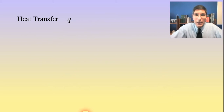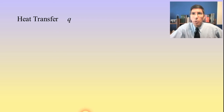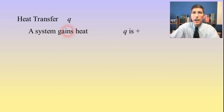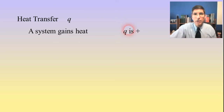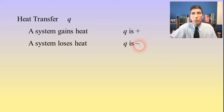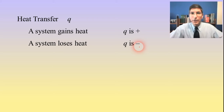When we say heat and work, heat or heat transfer is denoted by the letter Q. We're going to use Q to talk about heat transfer in chemistry. If the system gains heat, Q is positive — we call that an endothermic process. If a system loses heat, Q is negative, and that's what we call an exothermic process.